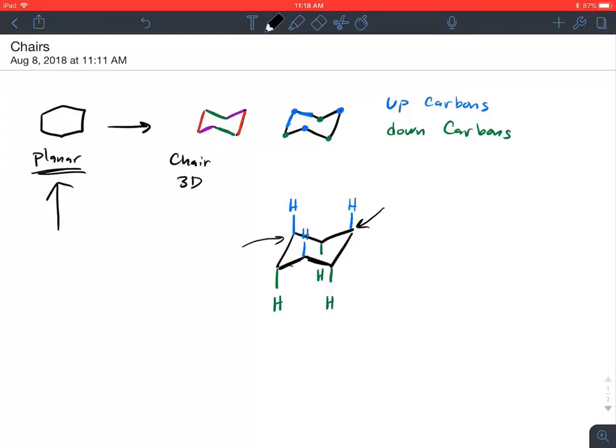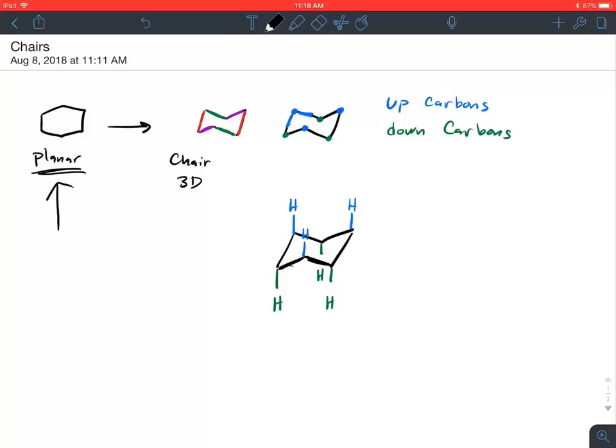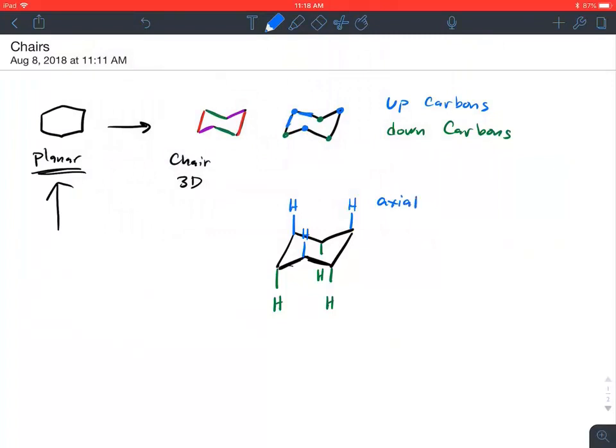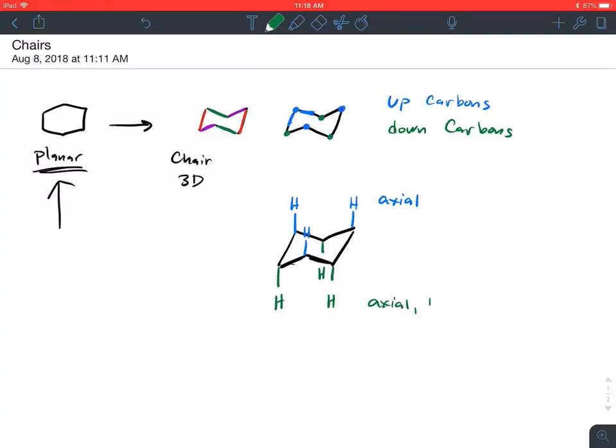If you have a model kit, now is a great time to get out your model kit, make a chair structure, add all 12 carbons, and see the relationships that we're going to explore here. So those are six of the 12 hydrogens that are on a simple cyclohexane. The other hydrogens will be located in what we call equatorial positions. I'm going to call these axial. The green are axial down. The blue are axial up. Now we're going to add the other hydrogens.